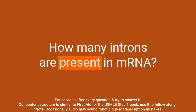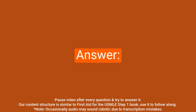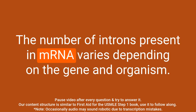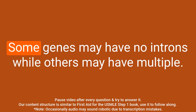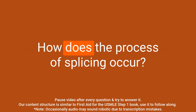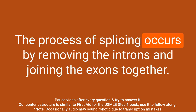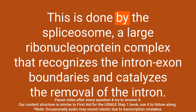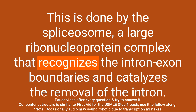Question: How many introns are present in mRNA? Answer: The number of introns present in mRNA varies depending on the gene and organism. Some genes may have no introns while others may have multiple. Question: How does the process of splicing occur? Answer: Splicing occurs by removing the introns and joining the exons together. This is done by the spliceosome, a large ribonucleoprotein complex that recognizes the intron-exon boundaries and catalyzes the removal of the intron.